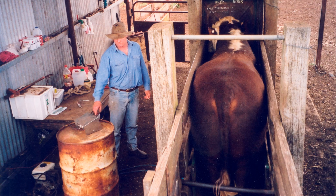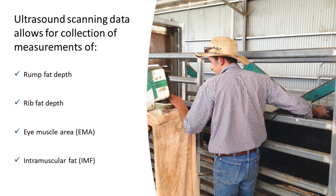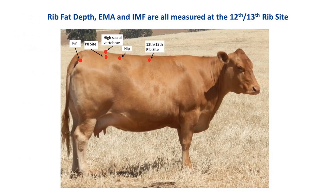This non-invasive technology allows animals to be assessed for carcass merit whilst still alive. Ultrasound scanning data allows for collection of measurements of rump fat depth, rib fat depth, eye muscle area or EMA, and intramuscular fat or IMF. Rump fat depth is measured at the P8 rump site, while rib fat depth, EMA and IMF are all measured at the 12th-13th rib site.